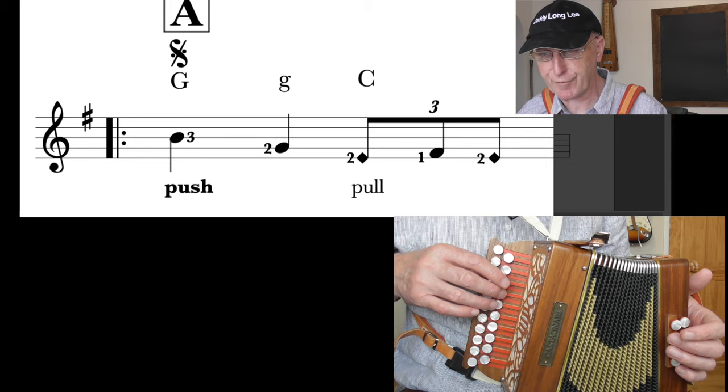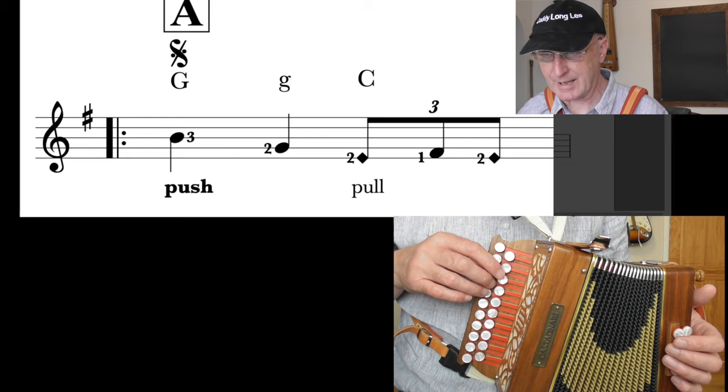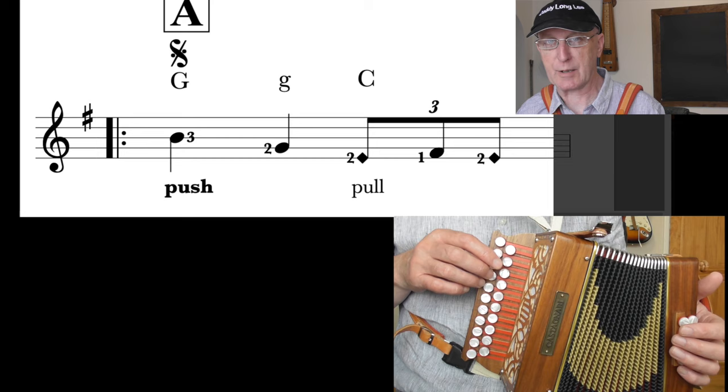And then we come over to the D row with the same finger. So finger two is used twice in a row. There's no way of avoiding that. It doesn't really matter. But you're still technically in position minus one.